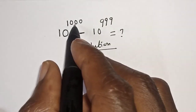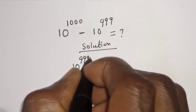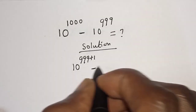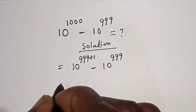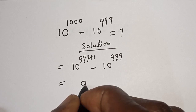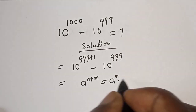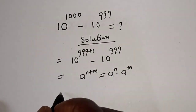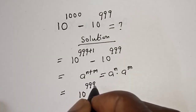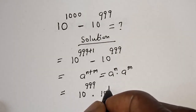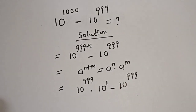10 raised to power 1000 can be written as 10 raised to power 999 plus 1, minus 10 raised to power 999. Take note of this rule: a raised to power n plus m is equal to a raised to power n multiplied by a raised to power m. This gives us 10 raised to power 999 multiplied by 10 raised to power 1, minus 10 raised to power 999.